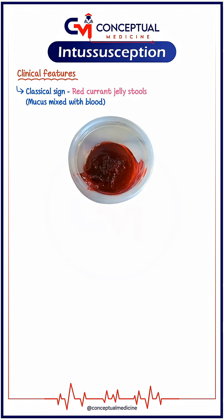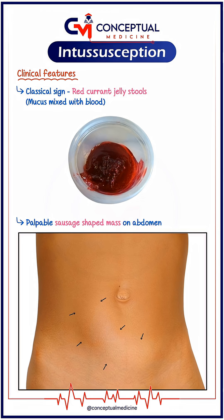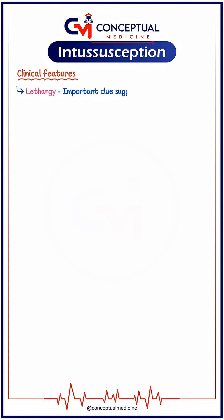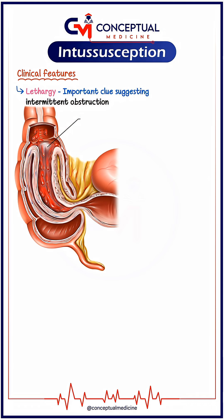A classical sign is red currant jelly stools, which represent mucus mixed with blood. On examination, you may feel a palpable sausage-shaped mass on the abdomen. Between the pain episodes, lethargy is a very important clue suggesting intermittent obstruction.